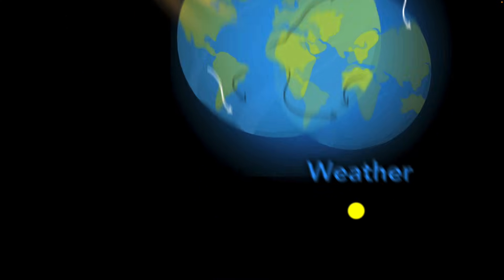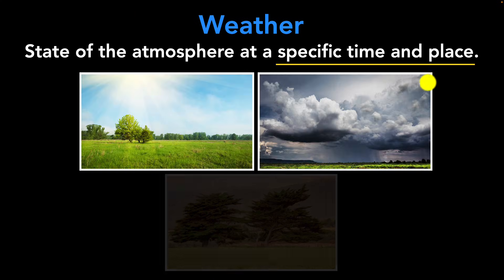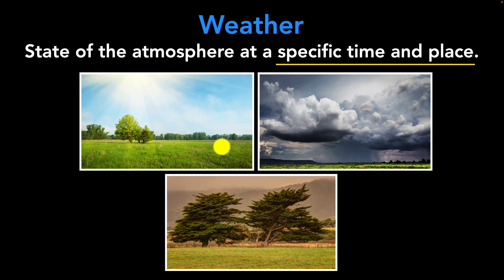First of all, quick reminder. What's weather? Well, weather is the state of the atmosphere at a specific time and place. For example, it can be sunny or rainy or windy. All that is weather.